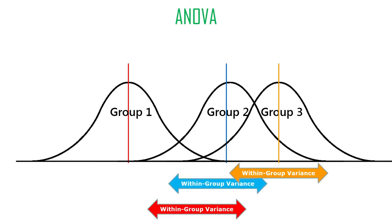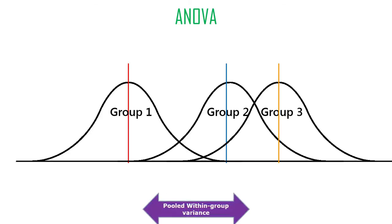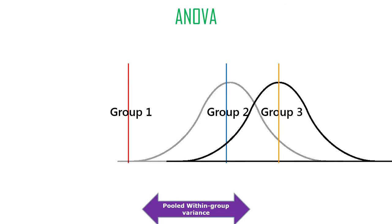We're going to average that within-groups variance together across however many groups we have — in this case three, but it could be any number, it just can't be one. We come up with an average or pooled within-group variance. Pooled just means averaged. So this is the average variability within each group. That's our estimate of sampling variation — our estimate of what we call error variance — and it's error because we can't explain it with our theory.